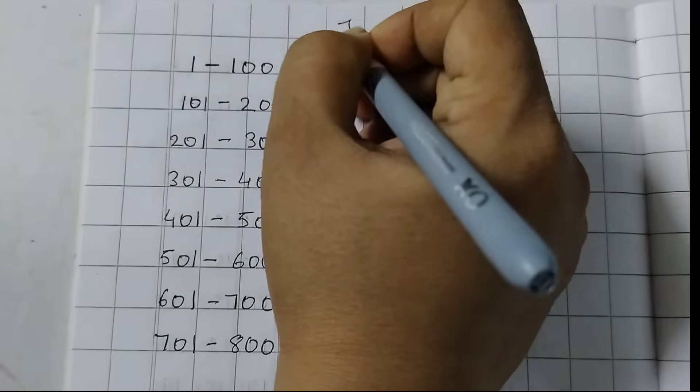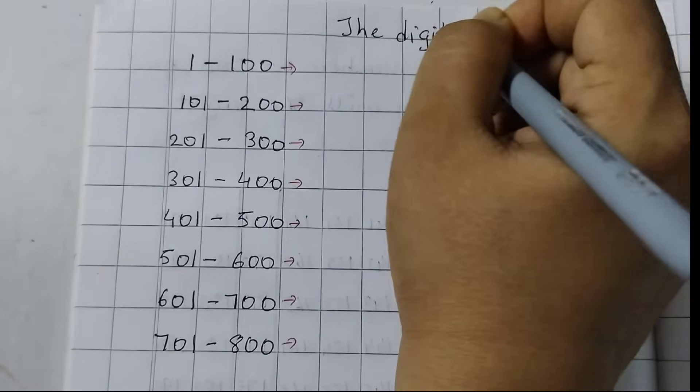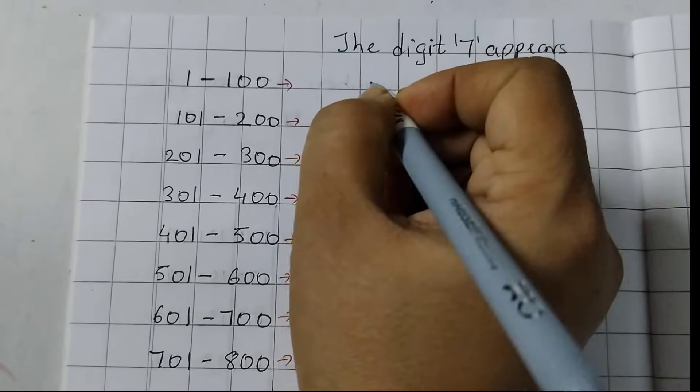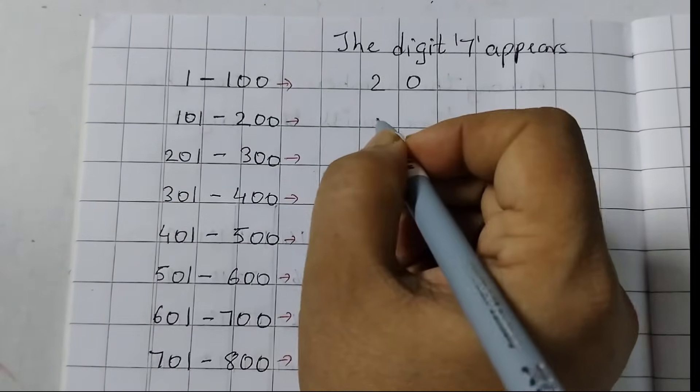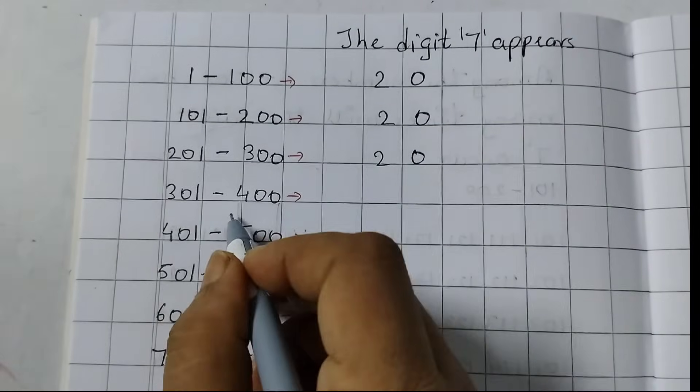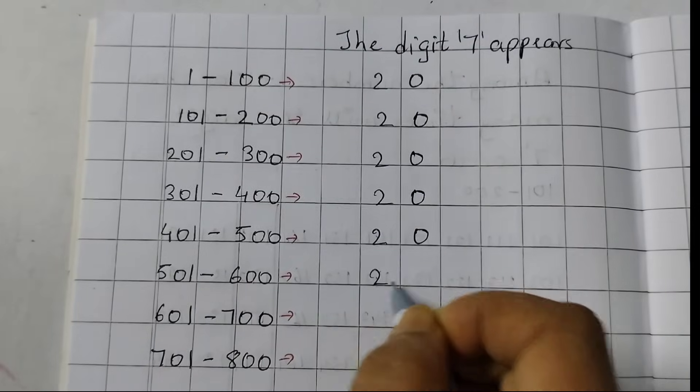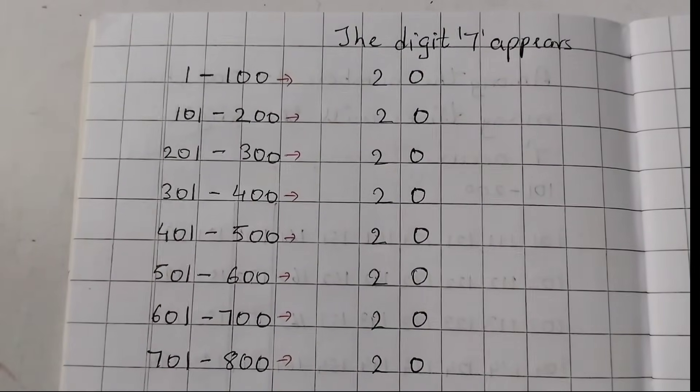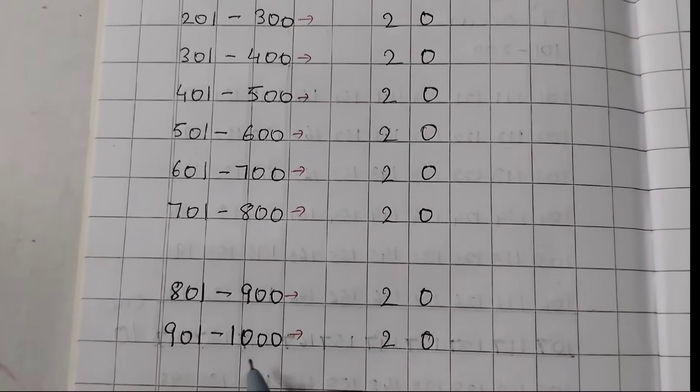Between 1 to 100, the digit 7 appears 20 times. Between 1 to 200, again it's 20 times. Now, from 201 to 300, it would be 20 times. 301 to 400, 20 times. So, we can just go on writing like this—20, 20 for all these numbers. I have written 20 till the end, 901 to 1000.